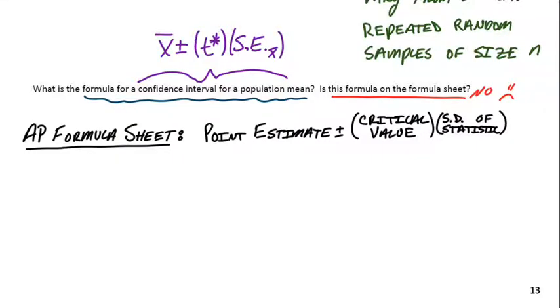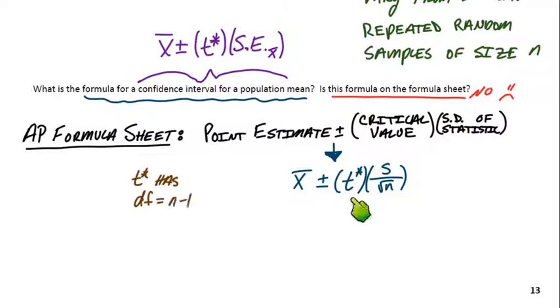As far as means are concerned, our point estimate, what we're building our interval off of would be X bar, our sample mean. Our critical value will be T star. Standard deviation of statistic, in this case, we use S over square root of N. Make sure we know T star has degrees of freedom set to N minus 1. In general, this is going to be our go-to. This is our formula for means.